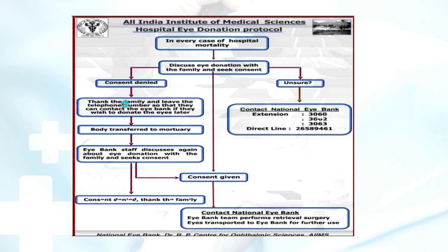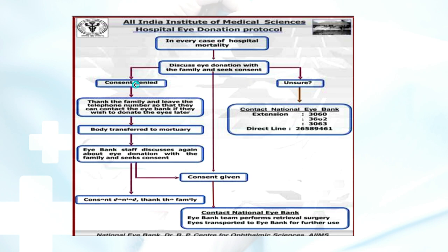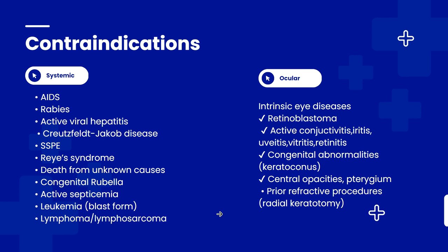If the family gives consent, thank them and leave a telephone number so they can contact the eye bank if they wish to donate. If they are unsure, they can contact the national eye bank helpline centers, where counsellors guide them on contraindications, how many people can be helped, and what the needs are. The deceased body is transferred to the mortuary. iBank staff discuss consent again; if consent is given, the national eye bank is contacted and they send people to harvest the tissue.